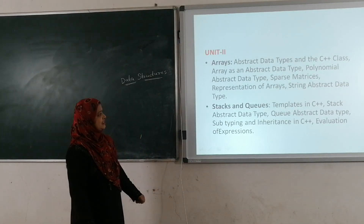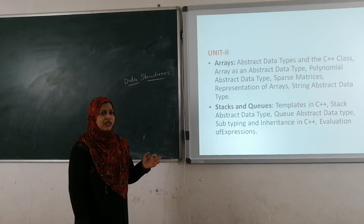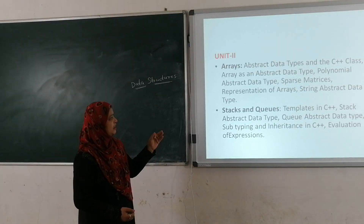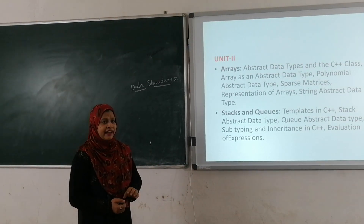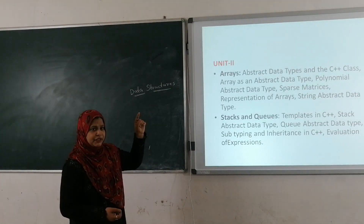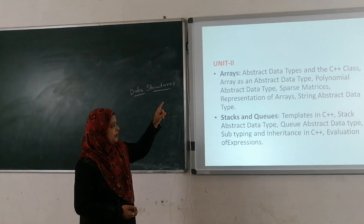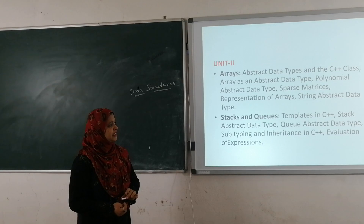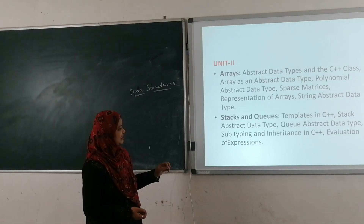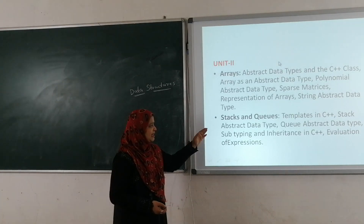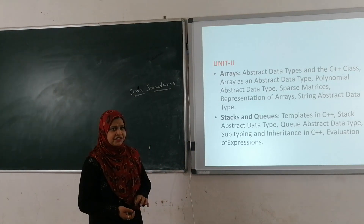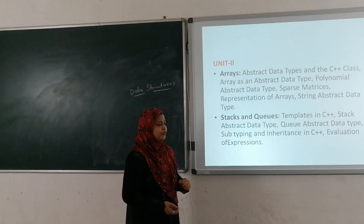In the second unit you are going to learn about what you mean by arrays, the different types of arrays, how you are going to implement arrays as an abstract data type, what you mean by sparse matrix representation of arrays, and how you are going to represent strings as an abstract data type. You will implement arrays and strings using C++. Next, stacks and queues are covered — what you mean by stack, its definition, its applications, and where you are going to use stacks in real-time applications.